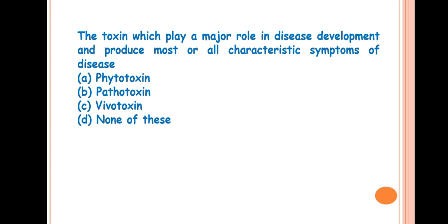Next, the toxin which plays a major role in disease development and produces most or all the characteristic symptoms of disease is called? Answer is Pathotoxin. In plants, pathogens produce three types of toxins: first is pathotoxin, then phytotoxin, and last is vivotoxin. Pathotoxin is the most important toxin and has direct relationship with pathogenicity and leads to development of characteristic symptoms.